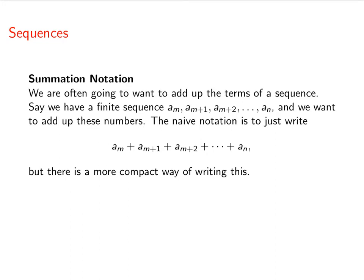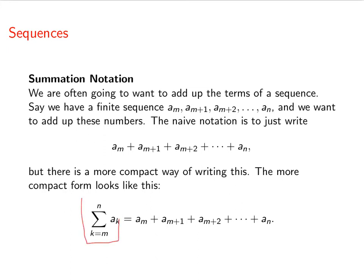Now there's a more compact way of writing this. The compact form is on the left side of this equation. We use the Greek letter sigma to denote sum. You've done all this sort of stuff before. The right side is just the naive way of writing things out.